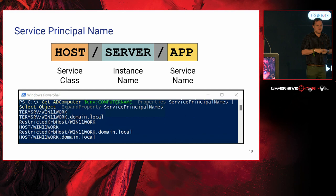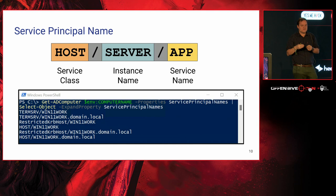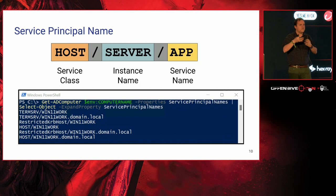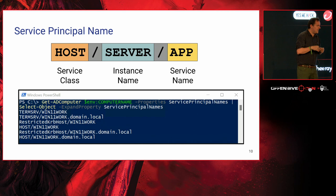The second component of the SPN is the instance name. In Microsoft environments, this is configured to be the name or domain name of the computer account associated with the SPN. The final component is the service name, which allows differentiation between different applications on the same server with the same service class — though in practice this is very rarely used.